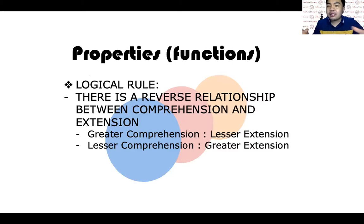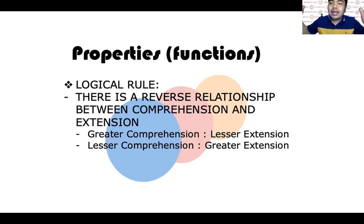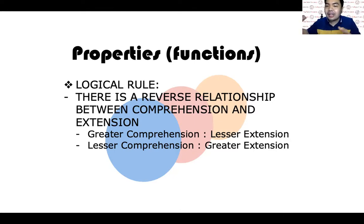Let's summarize the rule. The logical rule is that there is a reverse relationship between comprehension and extension. The greater the comprehension, the lesser the extension — they are always opposite. If the comprehension is lesser, the extension is much greater.